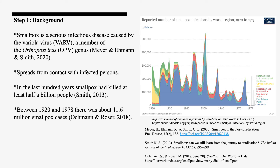The chart demonstrates the reported number of smallpox infections by world region from 1920 to 1977. Around 1951, there were 546,000 cases in total; however, the actual number is said to have been higher.